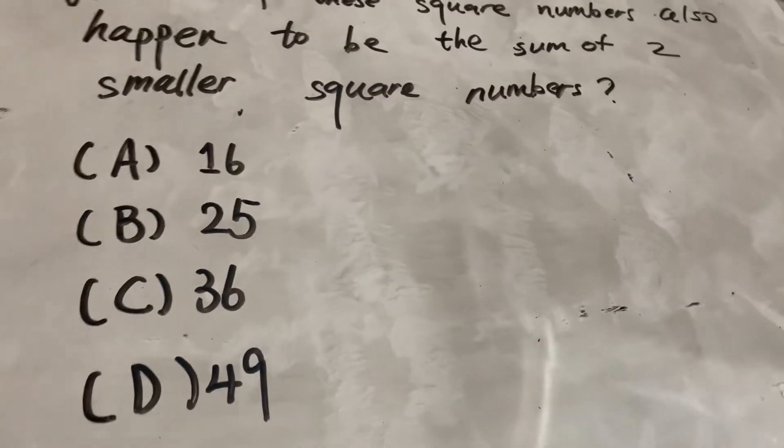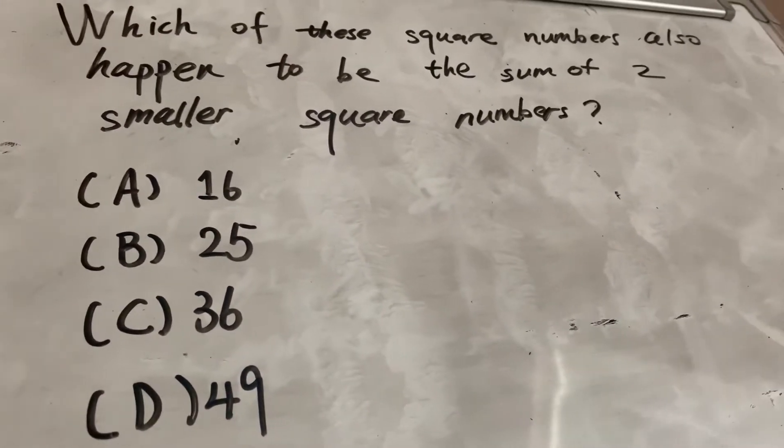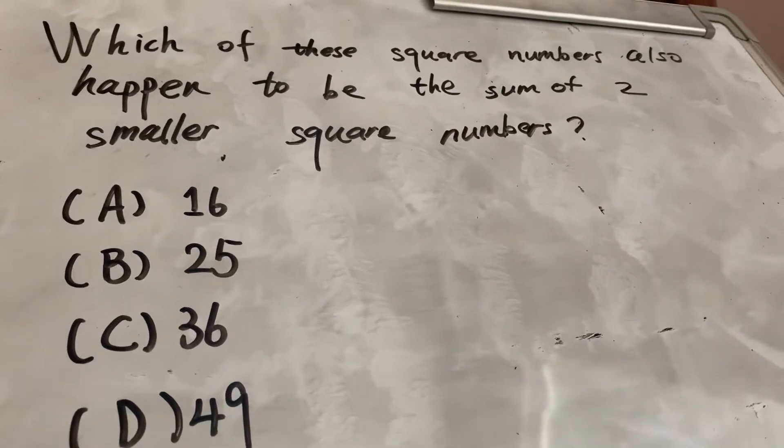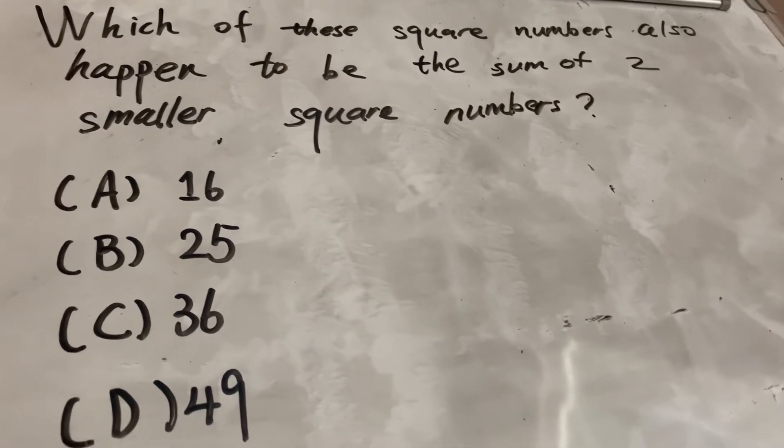Listen, you never know when you need math. Which of the following square numbers also happen to be the sum of two smaller square numbers?